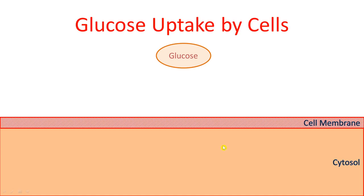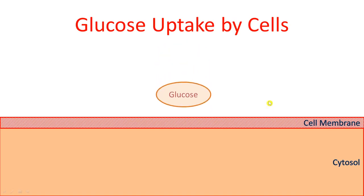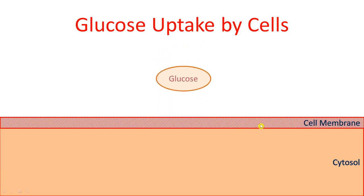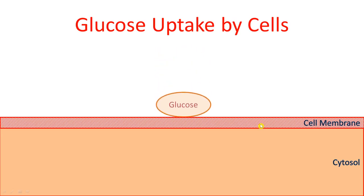Now let us talk about glucose uptake by the cells. The glucose molecule, in order to enter the cell's cytosol, must cross the cell membrane. However, the cell membrane will not allow glucose to enter by simple diffusion, because the glucose molecule is hydrophilic and the cell membrane is made up of phospholipids. Therefore, glucose requires a special transportation system — glucose transporters.